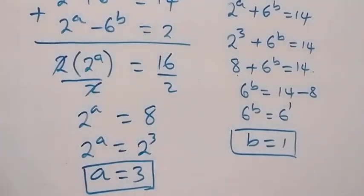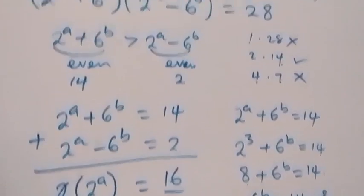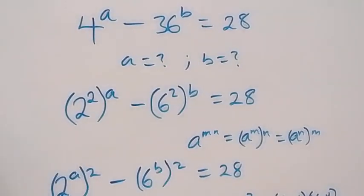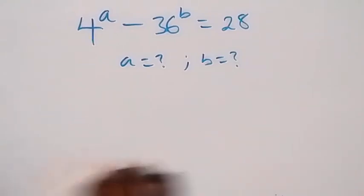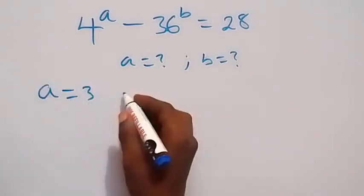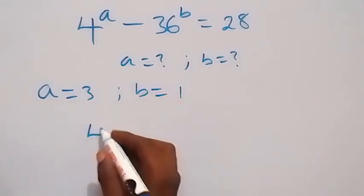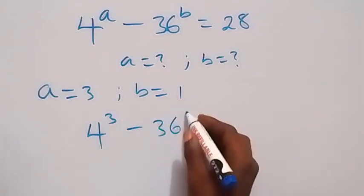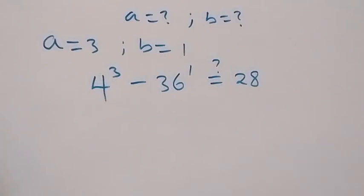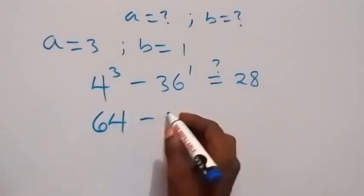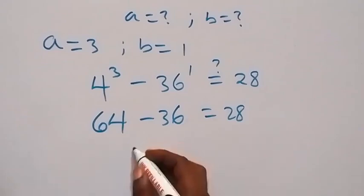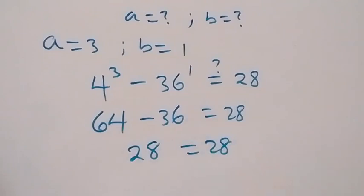We can check: from the original problem, 4 raised to the power a minus 36 raised to the power b equals 28. Substituting a equals 3 and b equals 1 gives 4 raised to the power 3 minus 36 raised to the power 1. Now 4³ = 4 times 4 times 4 = 64, so we have 64 minus 36, which equals 28. The left-hand side equals the right-hand side.